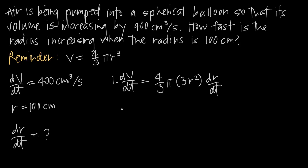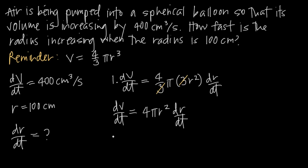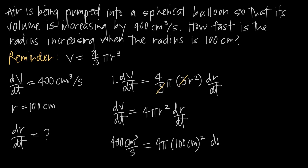Now we simplify. On the left we just get dV/dt. On the right-hand side, the 3 in the denominator cancels with the 3 from the power rule, leaving us with 4πr² times dr/dt. Now we know that dV/dt is 400 cm³/s, so we substitute that in. We've also been told the radius is 100 centimeters, so we plug in 100 for r, squaring it. We leave dr/dt in the equation because that's what we're trying to solve for.